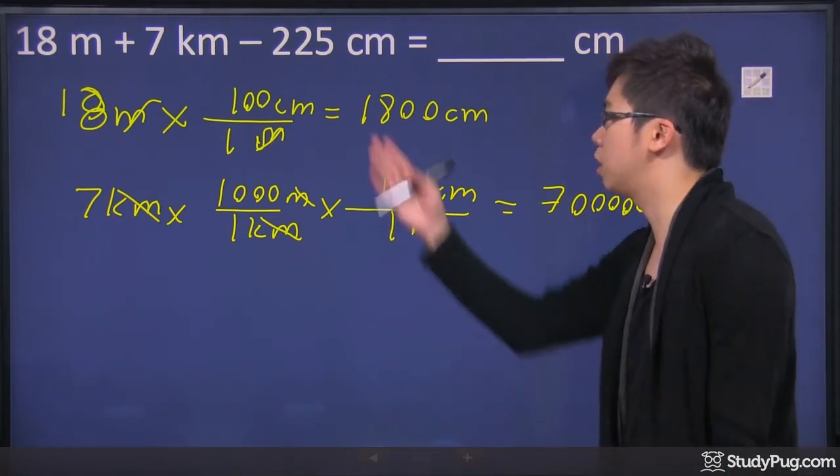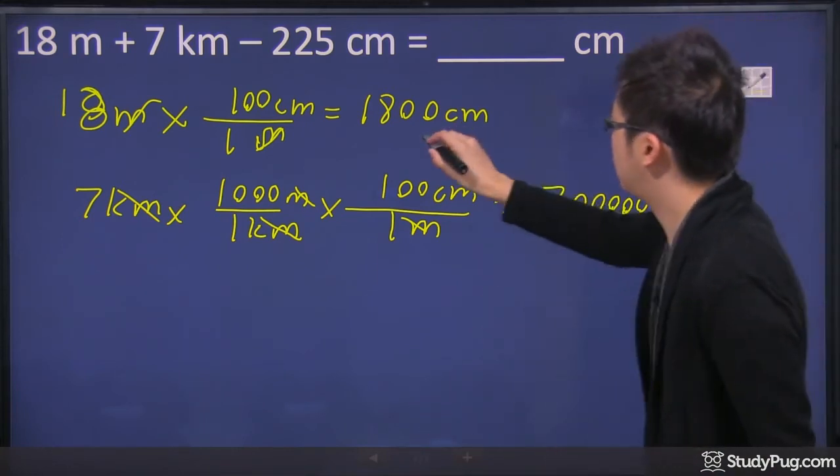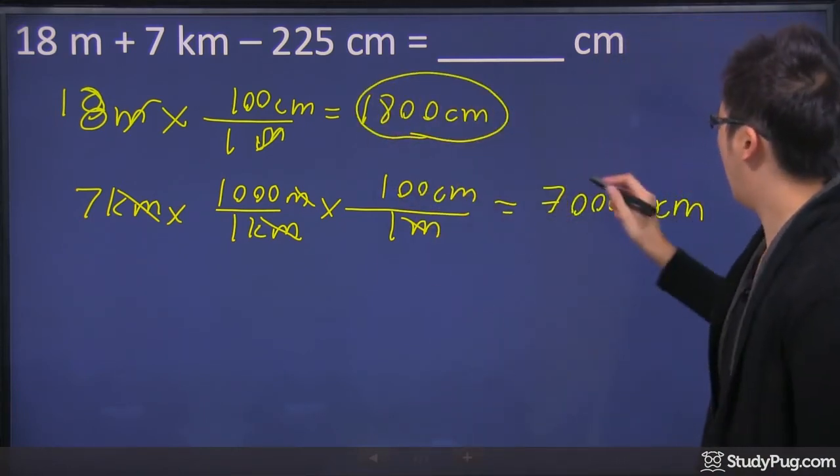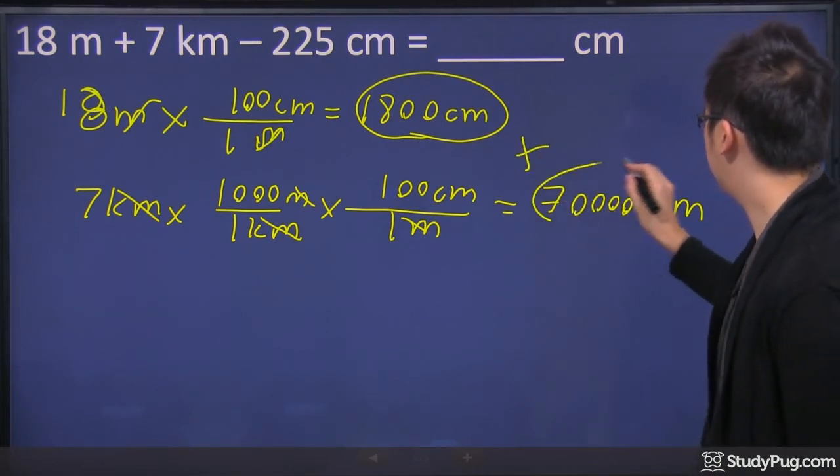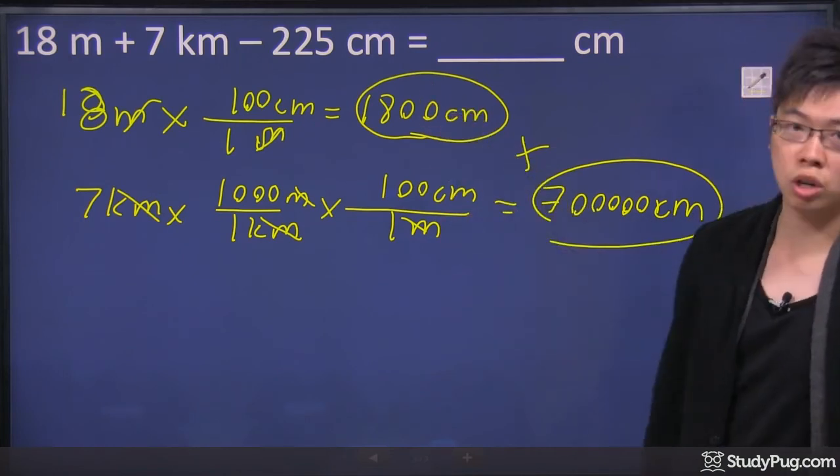The last one you don't even have to change because it's already 225 centimeters. So you just have to use your calculator. You're going to take the 1,800, add the 700,000, and you're going to subtract the 225.